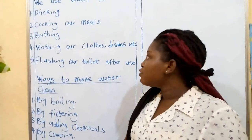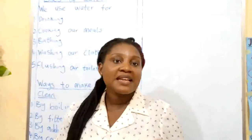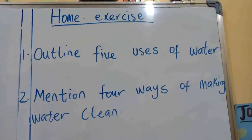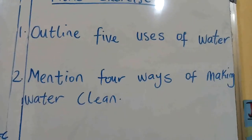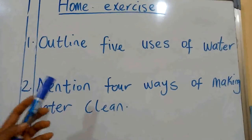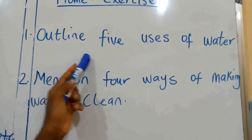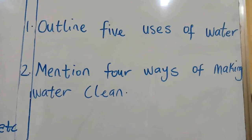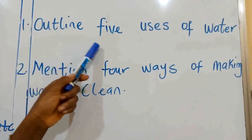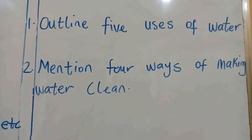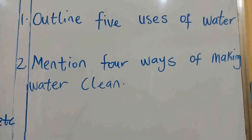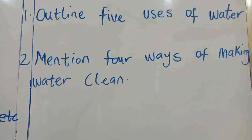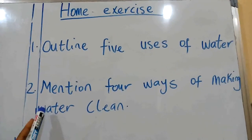Now I'm going to give you a home exercise. You have to copy the note on the board into your exercise book, then do your homework. The first question is: outline five uses of water — this water that we've been discussing. The second question is: mention four ways of making water clean. I showed you a picture of dirty water and also clean water. If your water is dirty, you can still make it clean — so write down how you would do that.